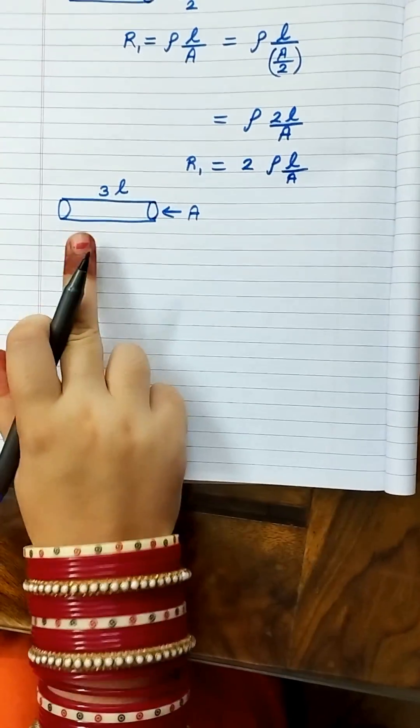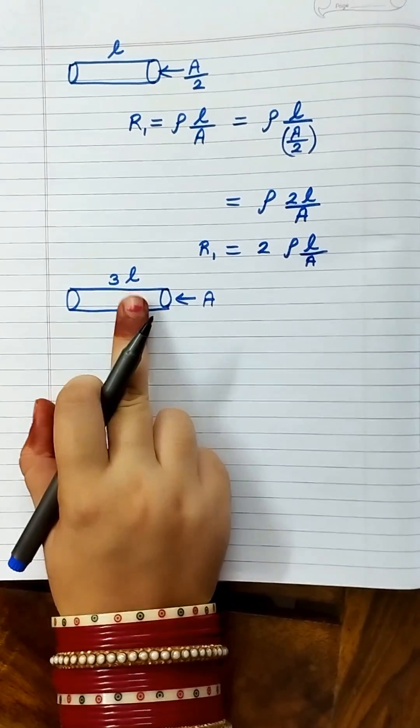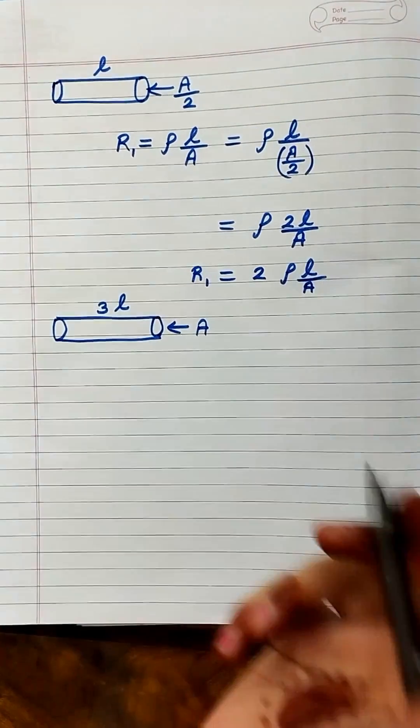Now for the second conductor, which has length 3L and area of cross-section A.